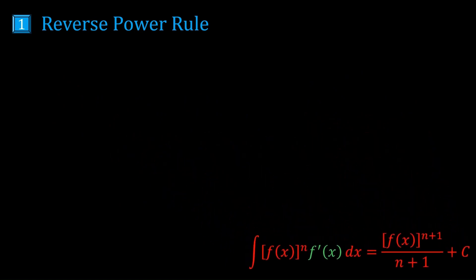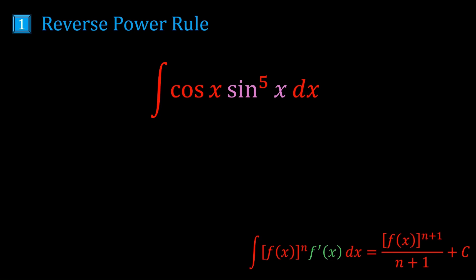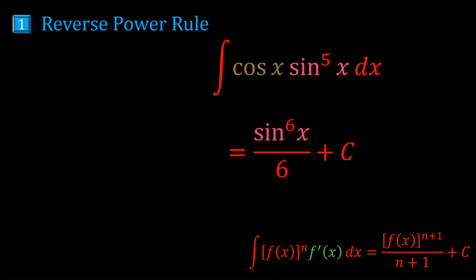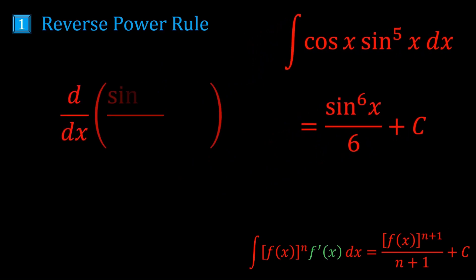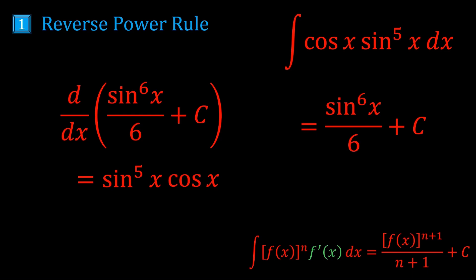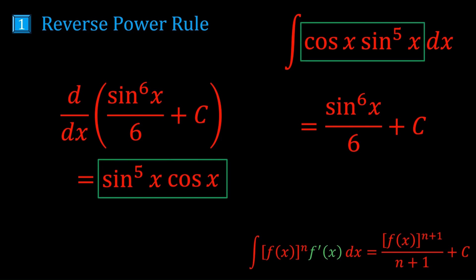We'll start with the integral of cos x times sin⁵x. We notice that sin x is raised to some power. So we look at sin x and ask: what is the derivative of sin x? It's cos x. And cos x is being multiplied here — it's right there. So the answer is literally just sin⁶x on 6 plus c. We just made sure it was in the right form and then used the formula. If you differentiate this, you get sin⁵x and, because of the chain rule, you multiply by cos x — so these two match.